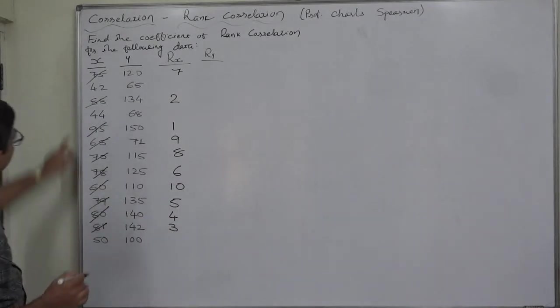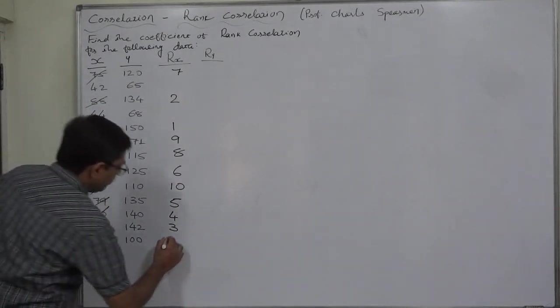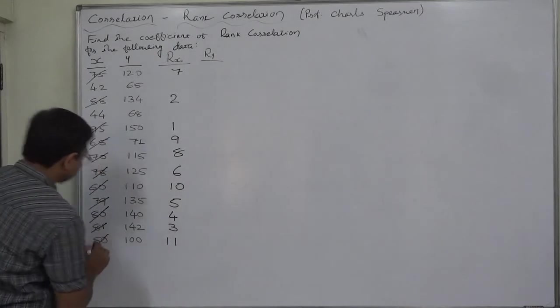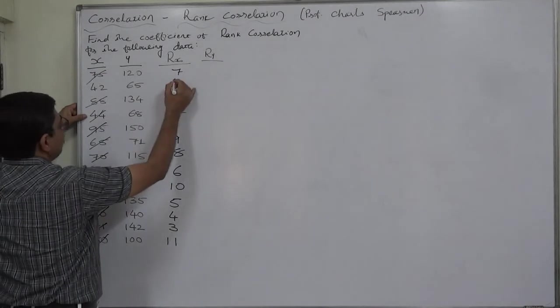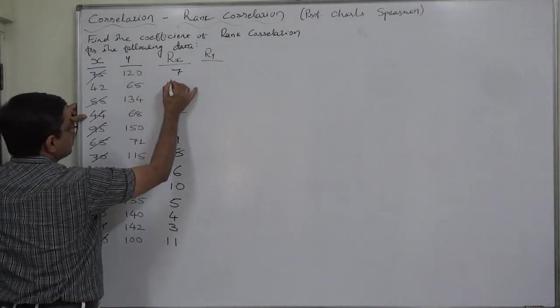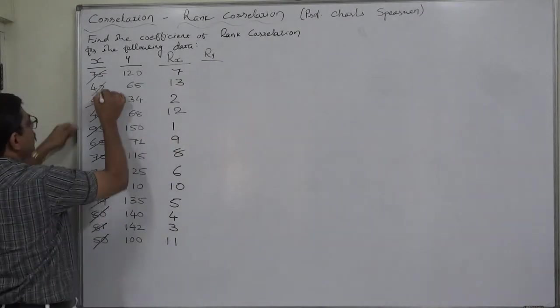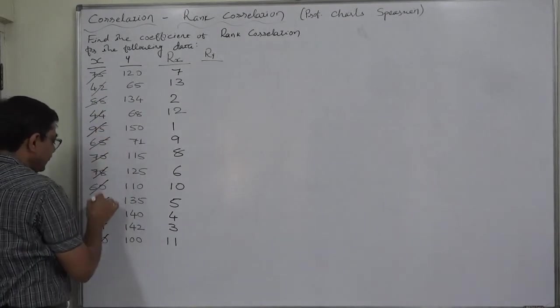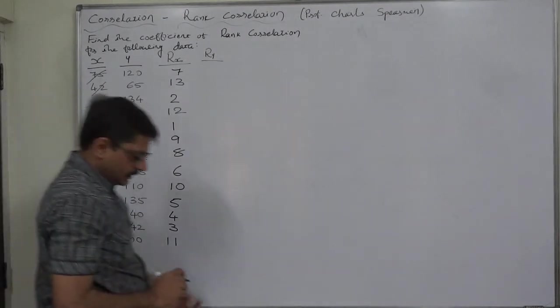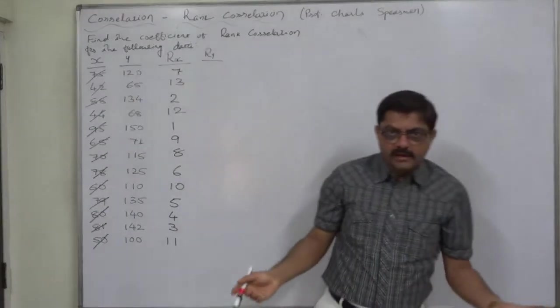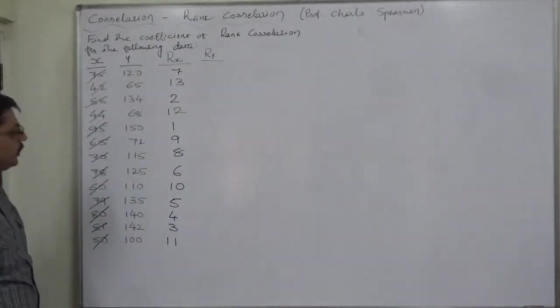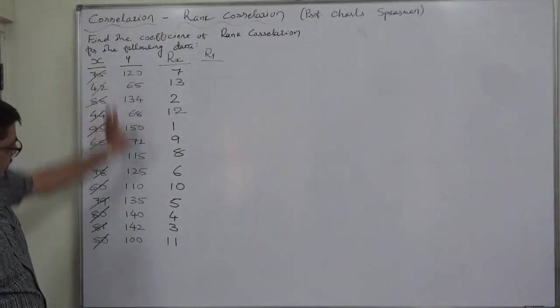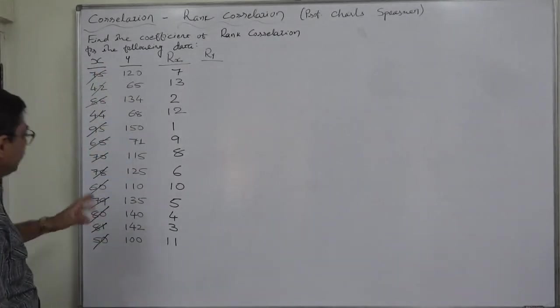Then, 50, 44 and 42. So, 50 will be assigned rank 11. 44 will be assigned rank 12 and 42 will be assigned rank 13. 1, 2, 3, 4, 5, 6, 7, 8, 9, 10, 11, 12, 13. Okay. So, there are 13 ranks from 1 to 13 and no value is repeating itself.